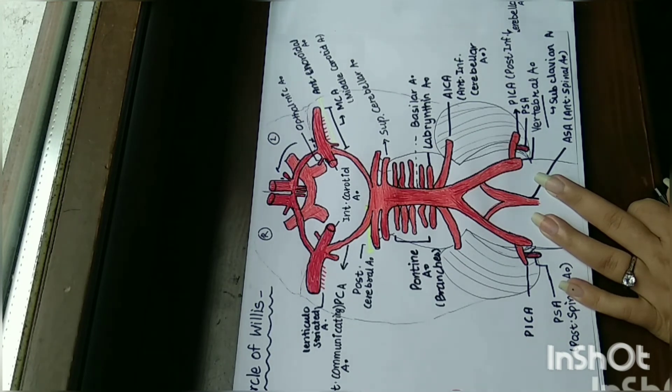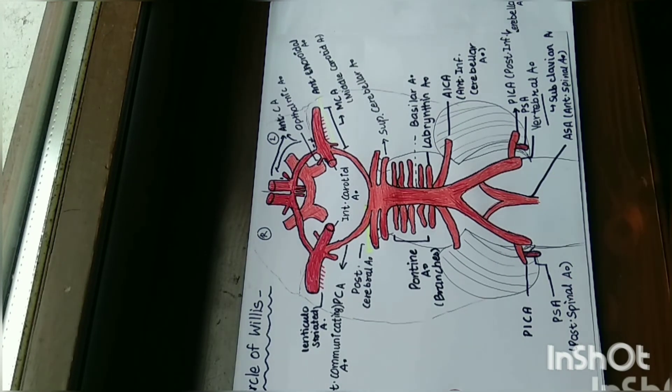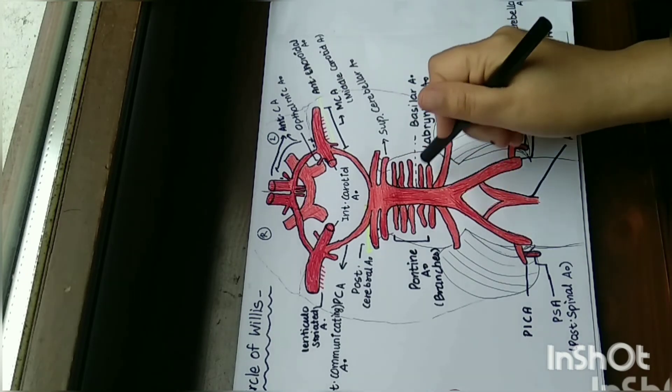Now the question is: in which structure of brain is the Circle of Willis present? We have the central nervous system, then pia mater, then arachnoid mater, then subarachnoid space, then subdural matter, then dura mater. From all these structures, where is the Circle of Willis present? In the subarachnoid space.